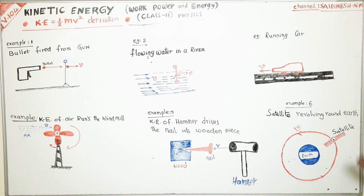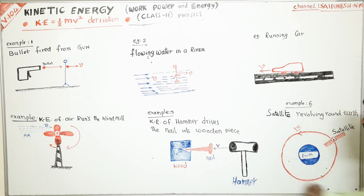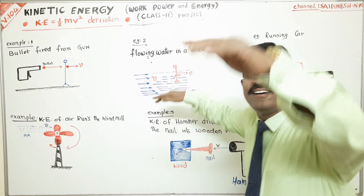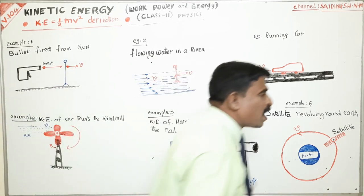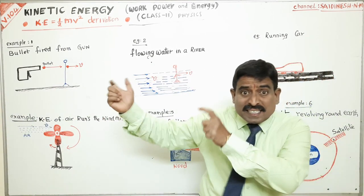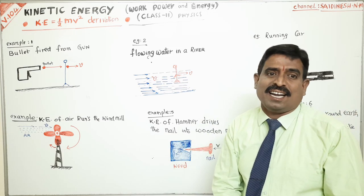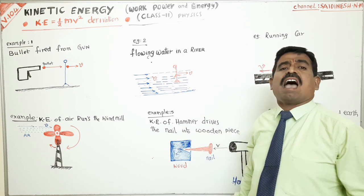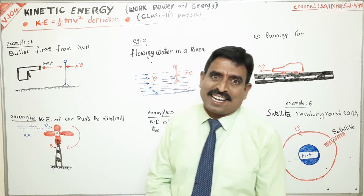A satellite revolving around the earth has kinetic energy — it has velocity, and due to that velocity it has kinetic energy. A flying bird is moving from one place to another, having velocity, and therefore kinetic energy. A running train, a flying aeroplane, and a moving bus all have kinetic energy. These are all examples of kinetic energy.